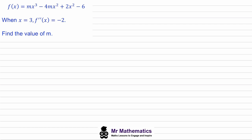Perhaps you want to try this yourself — pause the video and when you come back we'll go through the worked solution. The first thing we need to do is work out the first derivative f'(x). When we differentiate, we bring the 3 down to get 3m times x², then the same here gives us negative mx plus 4x, and the constant 6 goes.